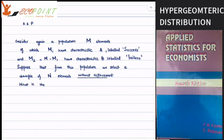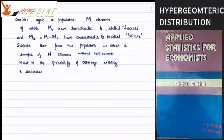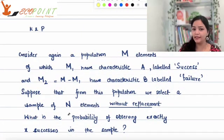What is the probability of observing exactly x successes in the sample? Let's see, in this situation, how will this probability be? We have a population of capital M, of which M1 have characteristic A, labeled as success. M2, which is M minus M1, have characteristic B called failure. If you observe here, you have that binomial phenomena. What's happening is that you have only two results, either success or failure.